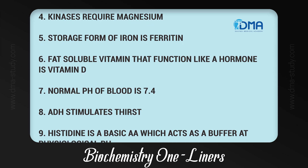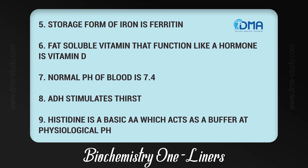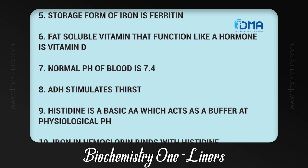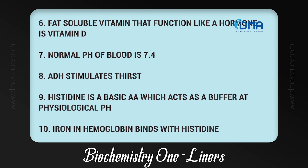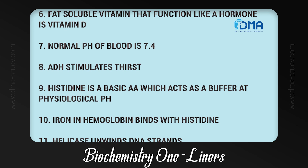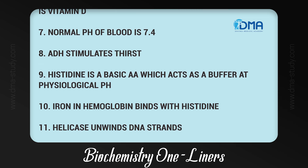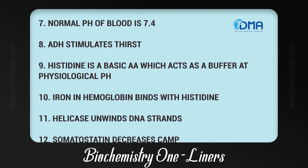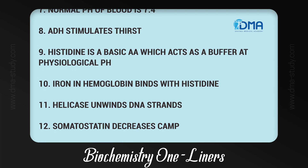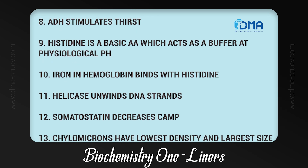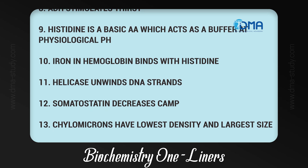8. Normal pH of blood is 7.4. 9. ADH stimulates thirst. 10. Histidine is a basic amino acid which acts as a buffer at physiological pH. 11. Iron in hemoglobin binds with histidine. 12. Helicase unwinds DNA strands. 13. Somatostatin decreases cAMP.